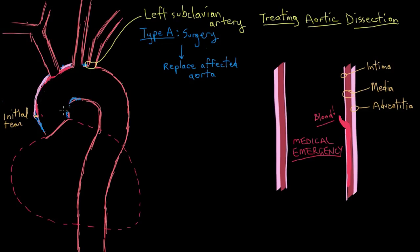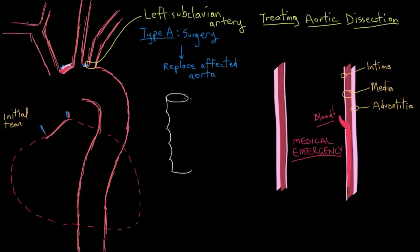All the layers — not just the intima, but the media and the adventitia as well — all of it gets cut out. The part that got cut out gets replaced with a graft, which is a synthetic tube that can take on the role of an aorta. It's nice and bendy and flexible, because if it's going to act like the aorta, it needs to be able to bend, be elastic, and withstand pressure. The graft is inserted inside the aorta, and that closes up the false lumen.